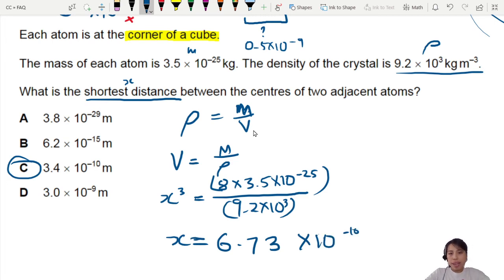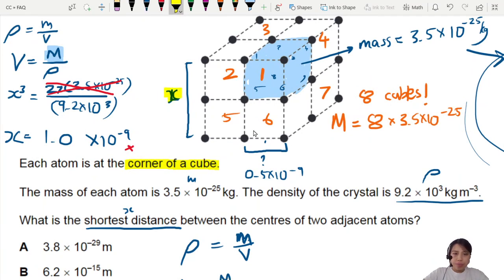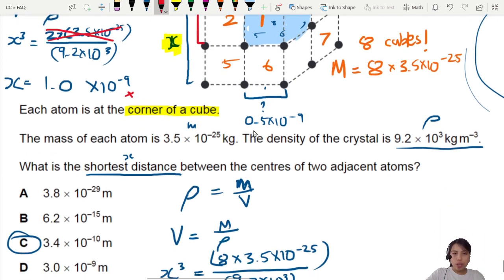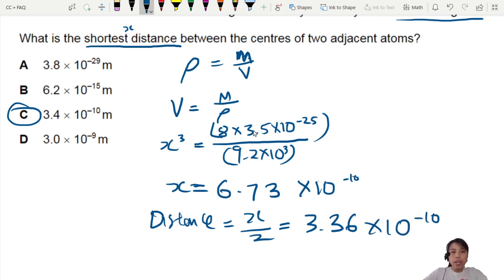But don't forget, what is this x? This x is the whole crystal. And we want to find only this one distance between two adjacent atoms. So you divide by 2. So the distance divided by 2 will be this. That's about 3.36 times 10 to the negative 10. And voila! That is the correct answer.